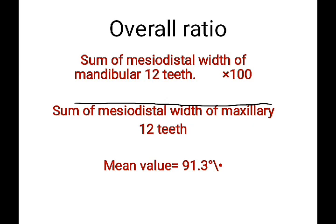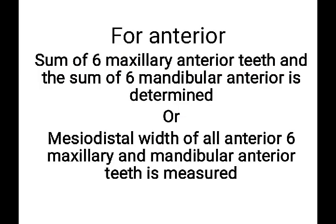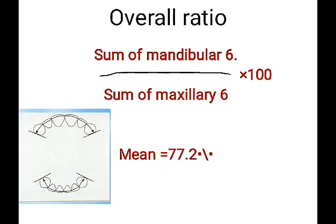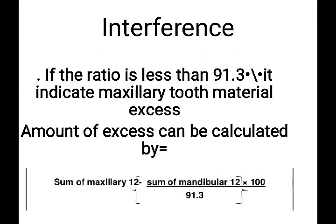For the anterior ratio, the sum of six maxillary anterior teeth and the sum of six mandibular anterior teeth are determined — that is, the mesodistal width of all six anterior maxillary and mandibular teeth is measured. The anterior ratio formula is: sum of mandibular 6 divided by sum of maxillary 6, multiplied by 100. The normal value is 77.2 percent.